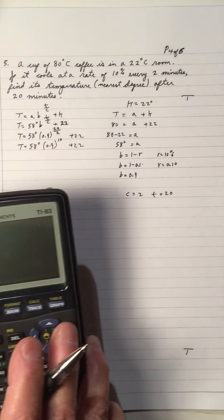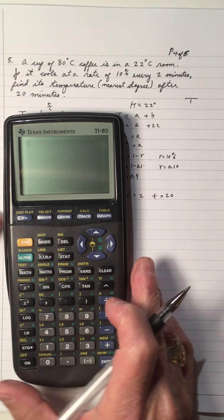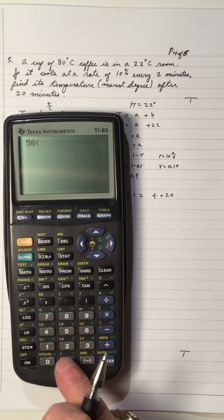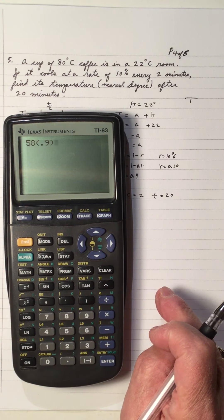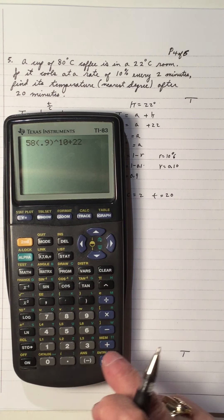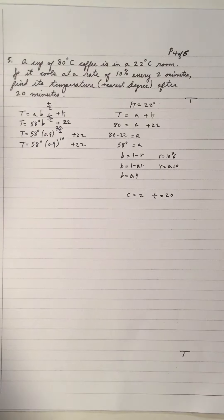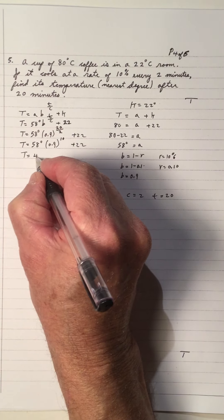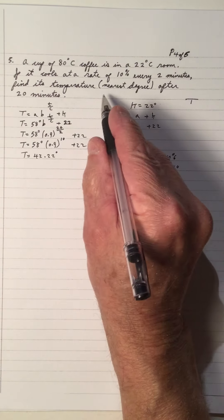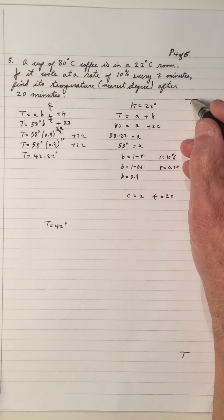Entering that into the calculator: 58 times 0.9 raised to the 10th power, plus 22, gives us 42.22. Rounded to the nearest degree, the temperature is 42 degrees Celsius. Give yourself a mark if you have 42 degrees.